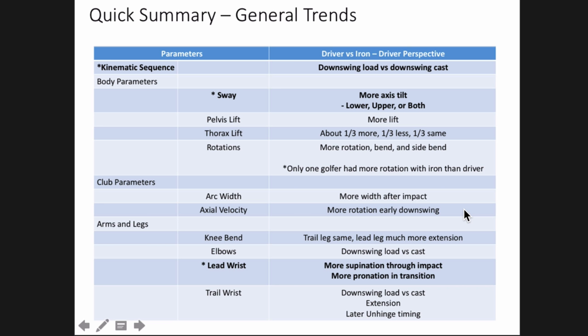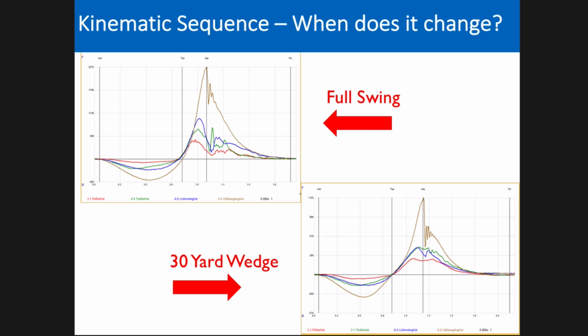With the 3D data I took a look at a number of different parameters, but in this presentation I focused on the kinematic sequence changes, the axis tilt changes — which we'll look at through the sway graphs — and then the lead wrist looking at supination. There were also changes in what the body did, how the club worked, as well as in the arms and legs. If you have a good data set, you can take a look at some of these patterns to see if your data matches what I was looking at.